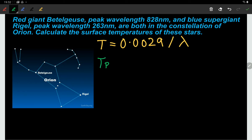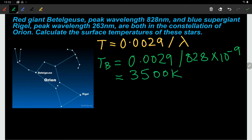So let's be careful with our standard form here, 828 times 10 to the minus 9. And we put those numbers in a calculator and we would get 3,500 Kelvin. Now looking at that wavelength of Betelgeuse, 828 nanometers is a very long wavelength. It's probably outside the visible spectrum. So Betelgeuse will radiate a lot in the infrared. A little bit of it will be in the visible part of the spectrum. Obviously it is a visible star because we can see it.